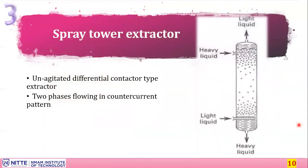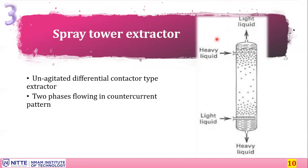The next type is the spray tower extractor. As the name suggests, it is a column in which liquid is sprayed and extraction takes place. It is an unagitated, differential contactor — no agitator is involved. The two phases flow in counter-current fashion. There are two designs for this extractor.